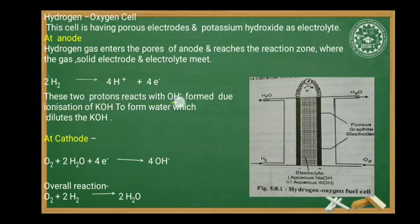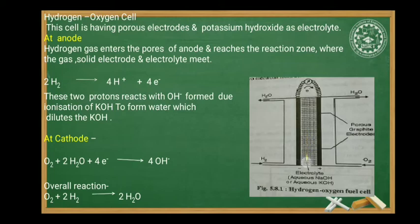The protons (H⁺) react with the OH⁻ ions formed due to the ionization of KOH. The H⁺ and OH⁻ combine to form water, which dilutes the KOH electrolyte. This is the reaction at the anode. The two electrons released move towards the cathode through the metallic wire.